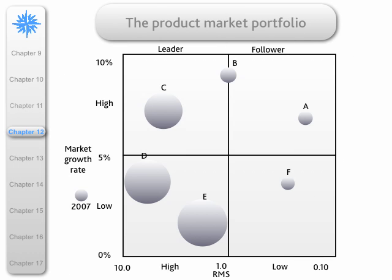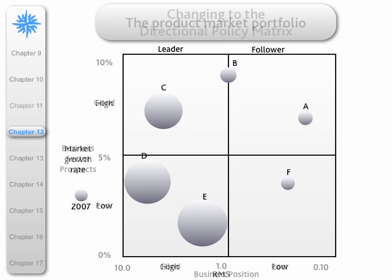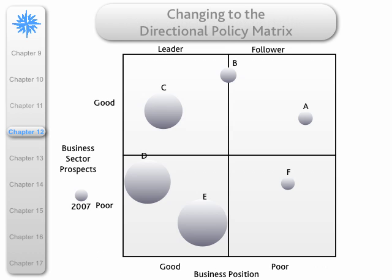Here is the original product market portfolio, and we can see there are two axes: relative market share and market growth rate. Many people and companies said we need something more comprehensive than just those two measures. So they replaced relative market share with the business position, and they replaced market growth rates with the business sector prospects.